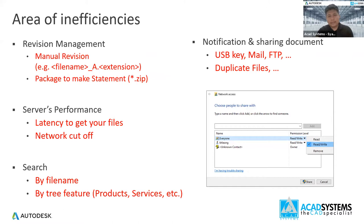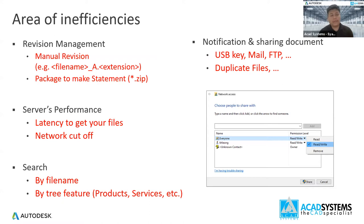For server performance, if you are using a normal method with a local server, if the network is cut, you cannot access the file anymore. But using Vault, you are also able to work offline. For search, you will search by file name. For example, using Inventor, if you want to search for an item at the project level, you need to select one by one and look for it. All these inefficiencies can be reduced using PDM — product data management.